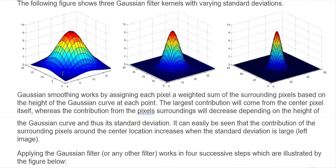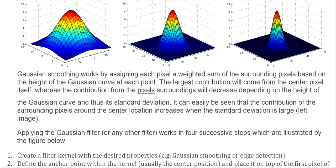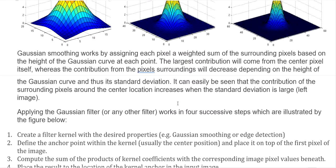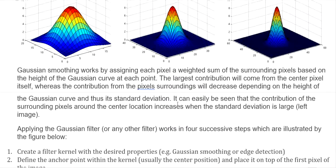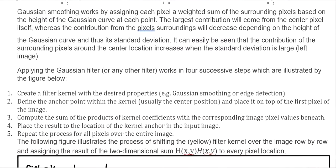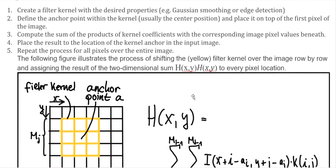Here is how Gaussian smoothing works. Each pixel is assigned a weighted sum of the surrounding pixels based on the height of the Gaussian curve at those points. The largest contribution comes from the central pixel itself, whereas contributions from surrounding pixels decrease depending on the height of the Gaussian curve and its standard deviation. The kernel is a small matrix with an anchor point in the middle, which is different from the large matrix of the image.